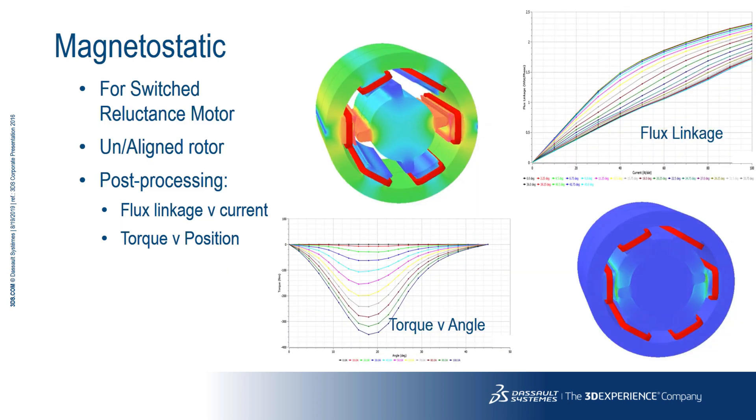The machine's environment magnetor stack analysis for SRMs creates a series of static jobs for different rotor positions between the aligned and unaligned rotor positions. The output includes flux linkage versus current for different rotor positions between aligned and unaligned positions and torque versus rotor position for different current excitation.